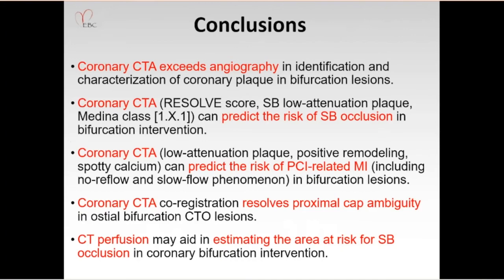In conclusion, coronary CT exceeds invasive angiography in identification and characterization of coronary plaque in bifurcation lesions. Coronary CT can predict the risk of side-branch occlusion and the risk of PCI-related MI in bifurcation lesions. Last but not least, coronary CT co-registration resolves proximal cap ambiguity in ostio-bifurcation CTO lesions. Finally, CT perfusion may aid in estimating the area at risk for side-branch occlusion in coronary bifurcation intervention. Thank you.